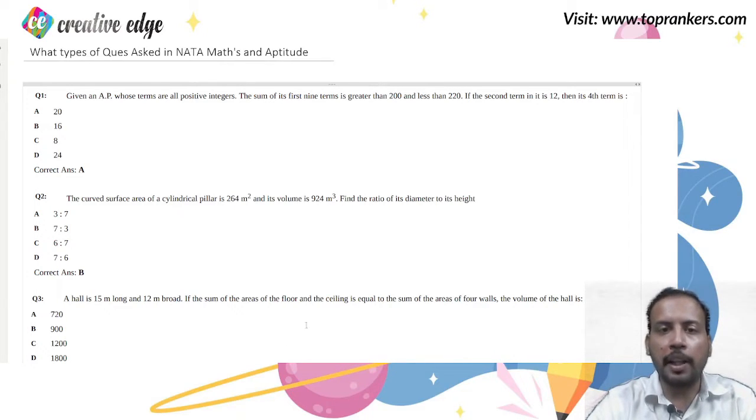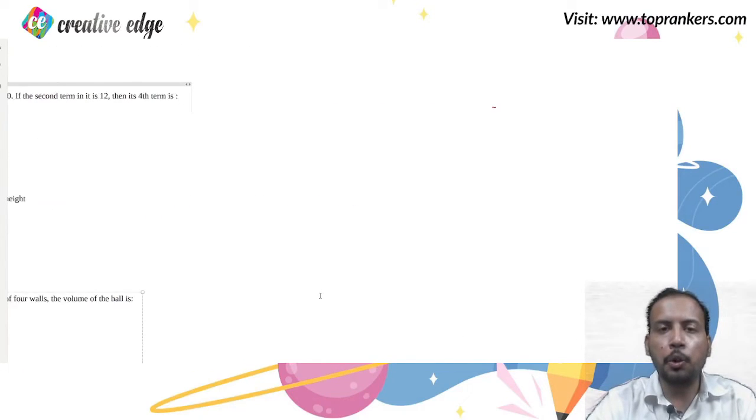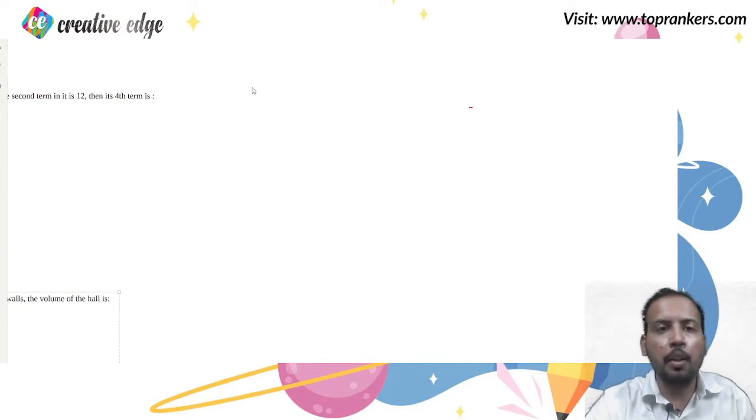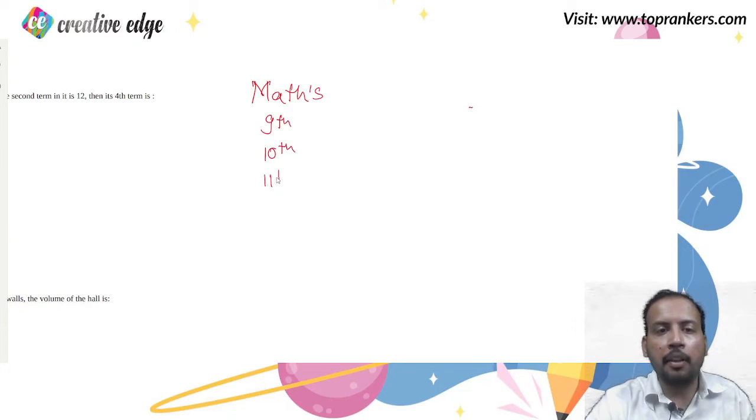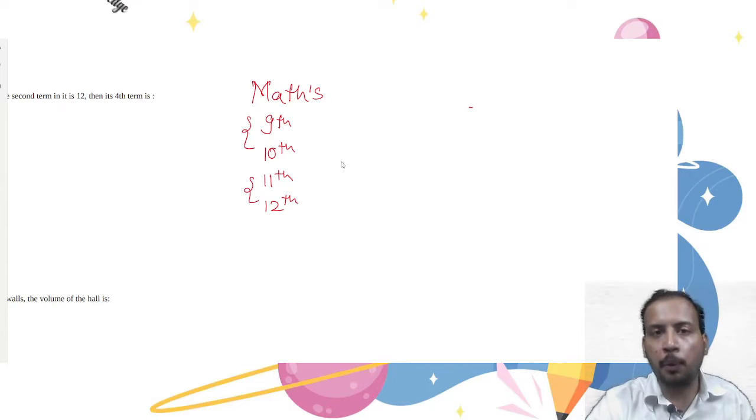So when I say these two keywords Mathematics and Aptitude, you should understand the difference between the two. When I say Mathematics, its questions are from class 9th, 10th, 11th and 12th. Majorly the questions are from 9th and 10th but you should also be prepared from selected topics of 11th and 12th.